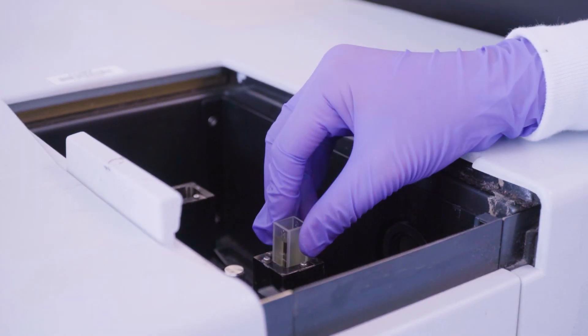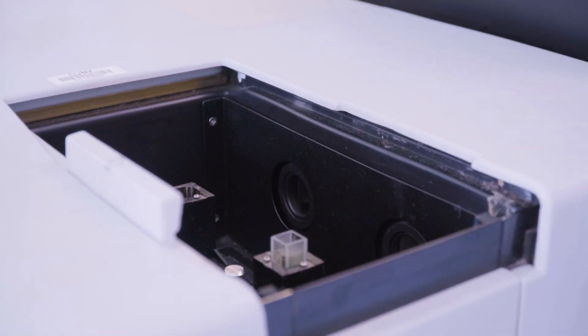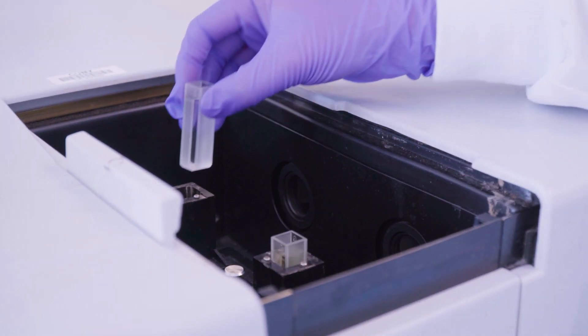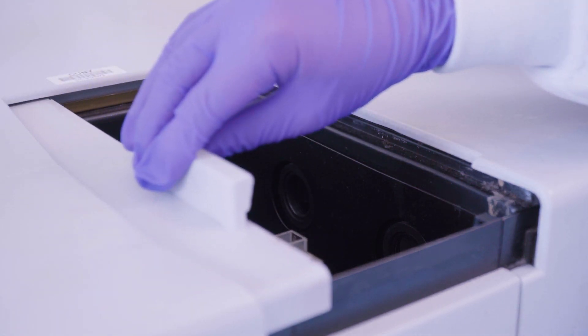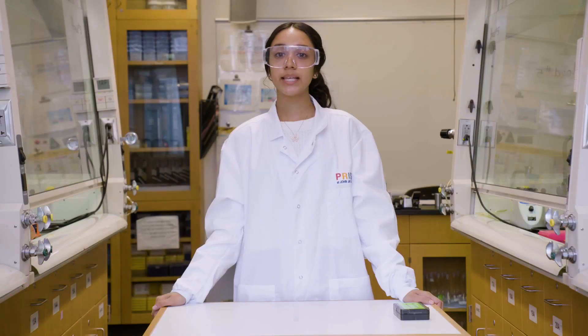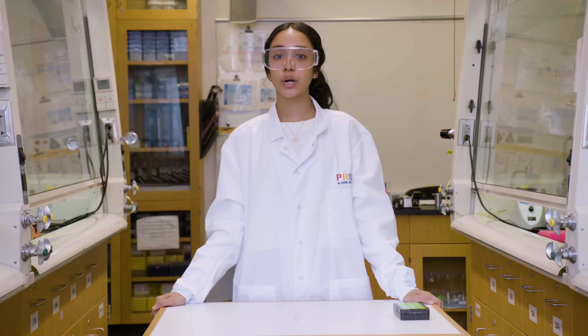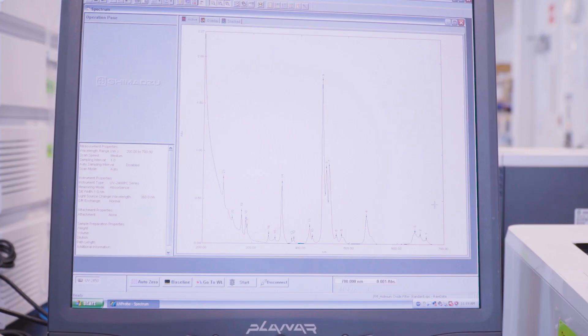For those using a double beam instrument, place a sample cuvette in the front and the reference solution in the back. Close the door tightly to prevent any light from leaking into the sample compartment during analysis. Click the start button on the screen to begin the run.